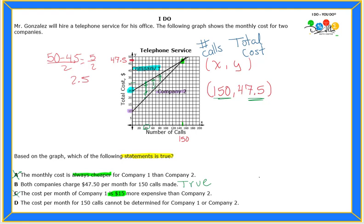Letter D says the cost per month for 150 calls cannot be determined for Company 1 or Company 2. I don't think that's right because I know what they may be thinking—there's no 150, but we figured it out. It's right in between those two.